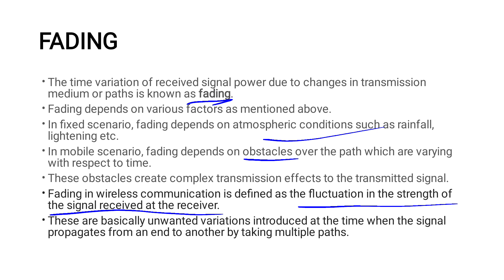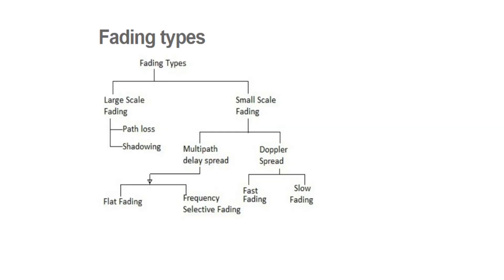At first, there are some unwanted variations in the signal. The signals travel through multiple paths. And we call it fading. This fading has different types. Our communication channel which undergoes fading — we call it fading — and there are different types. Fading types: large scale fading and small scale fading.